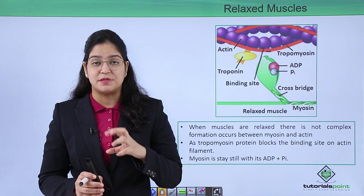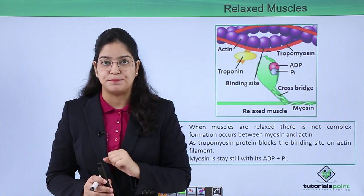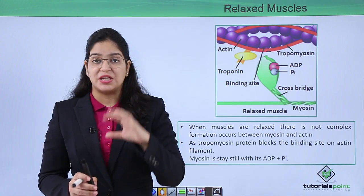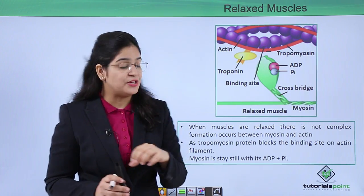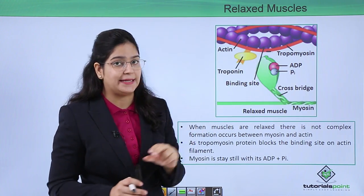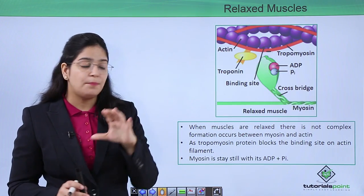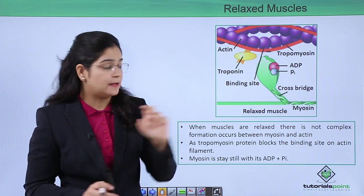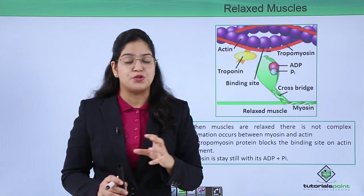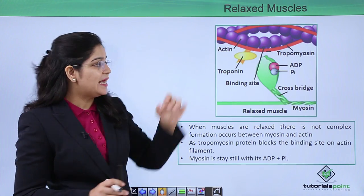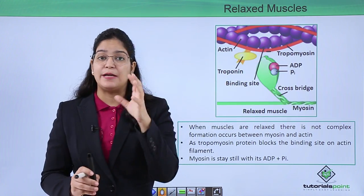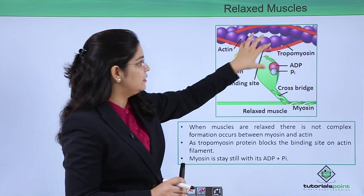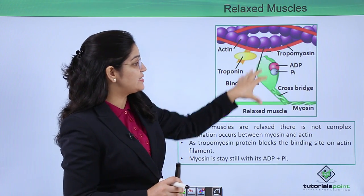To make muscles relax, there must be an 'off' system. We know that at the time of muscle contraction, there is a complex formation between the myosin head and actin. To stop this complex from forming, there must be an off system. This off system is provided by tropomyosin, which is a protein that blocks the binding site on actin. By blocking the binding site, the myosin head is not able to bind with actin.